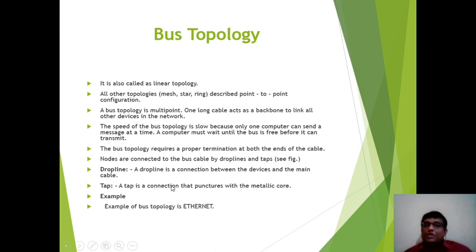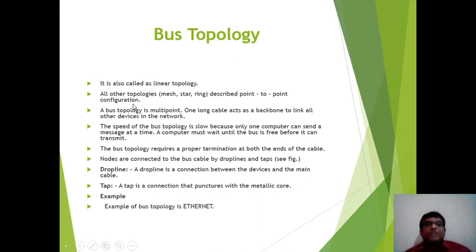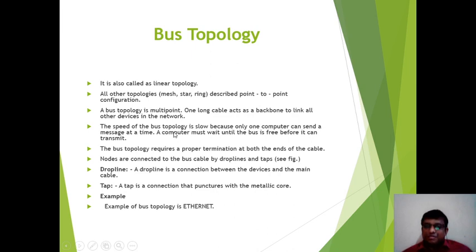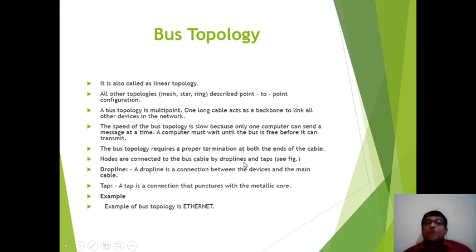Last but not least, Bus Topology — also called Linear Topology. All other topologies describe point-to-point connections, but the main feature of bus topology is the multipoint connection. One long cable acts as the backbone to link all devices in the network. The speed of bus topology is slow because only one computer can send a message at a time. A computer must wait until the bus is free before it can transmit. Bus topology requires proper termination at both ends of the cable, and nodes are connected to the bus cable by drop lines and taps.